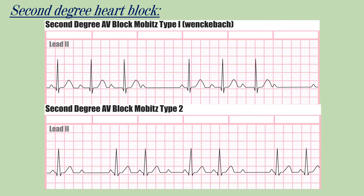Second degree heart block has two types: Mobitz type 1 and Mobitz type 2. In type 1, there is a progressive lengthening of the PR interval followed by a failure of conduction of the impulse — we can see a P wave without a QRS complex. This is followed by a short PR interval, then repetition of the cycle.